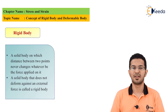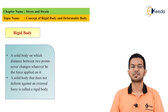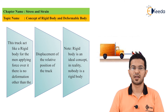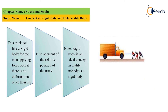Let's understand it with an example. In the diagram shown in the figure, a truck is to be pulled by a person. There might be some displacement in the position of the truck against the forces applied by the person, but there is no deformation. And if there is no deformation, that force can be neglected. So, a rigid body is a body that does not deform against any external force, or it can also be defined as a body in which the distance between two points never changes, whatever be the forces applied to it.